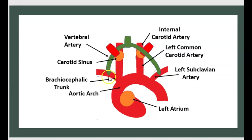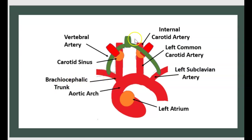The vertebral system is constituted by two arteries coming from the brachiocephalic trunk. They connect together as a basilar trunk going to the brain through the posterior cerebral artery.